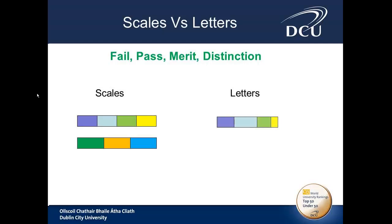Letters, on the other hand, give the lecturer an awful lot more control. Taking the same four points — fail, pass, merit and distinction — a lecturer can decide that a fail is anything below 50 percent, a pass is between 50 and 65, between 65 and 80 is a merit, and a distinction is 85 to 100 and so on. So in that respect, letters in Moodle can be more useful. There is one drawback, however: in one Moodle course you can have several scales, but you can only have one set of letters.